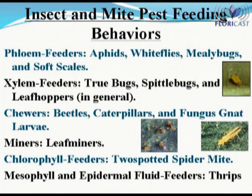An additional item to understand is the feeding behavior of insect and or mite pests. There are six distinct feeding behaviors among the different insect and or mite pests that feed on greenhouse-grown crops, including: 1) phloem feeders such as aphids, whiteflies, mealybugs, and soft scales; 2) xylem feeders such as true bugs, spittlebugs, and many leafhopper species; 3) chewers such as beetles, caterpillars, and fungus gnat larvae; 4) miners such as leaf miners; 5) chlorophyll feeders such as two-spotted spider mite; and 6) mesophyll and epidermal fluid feeders — in this case thrips.